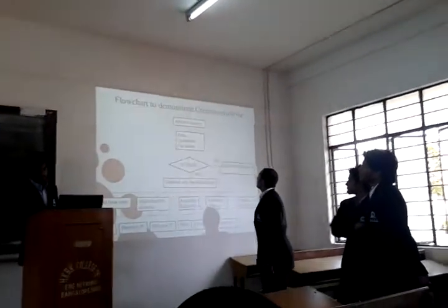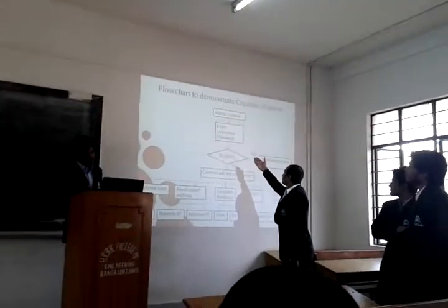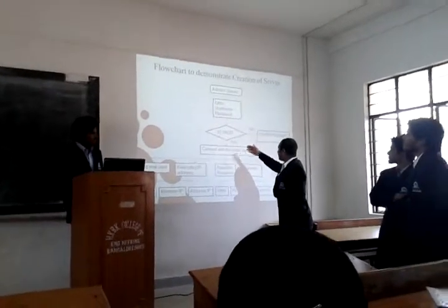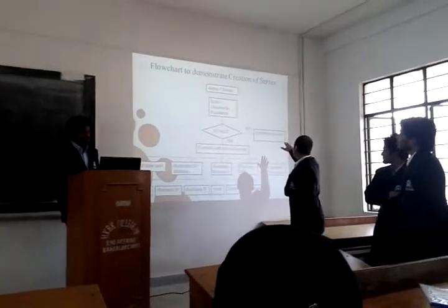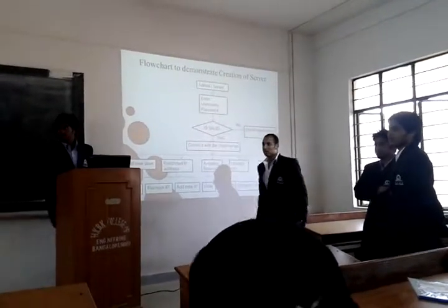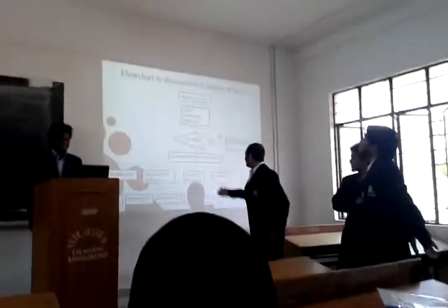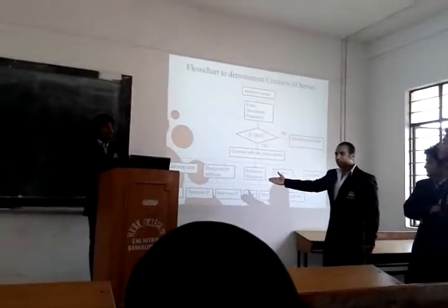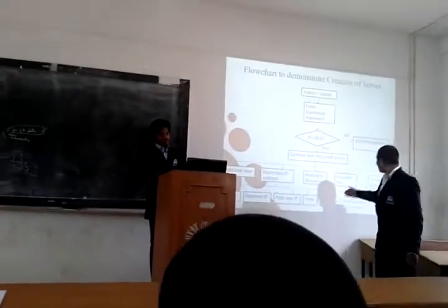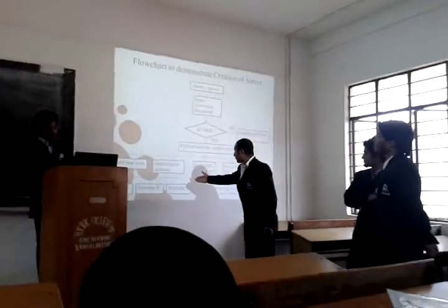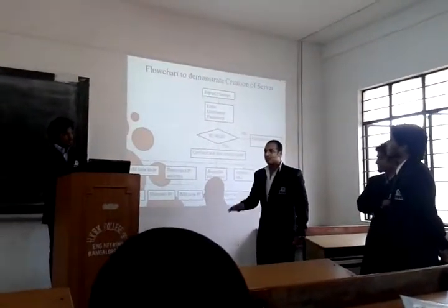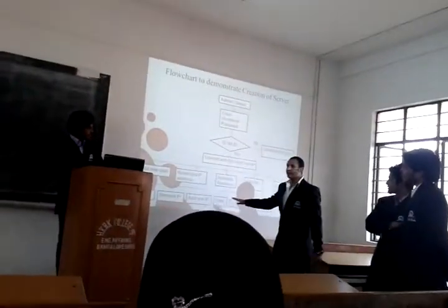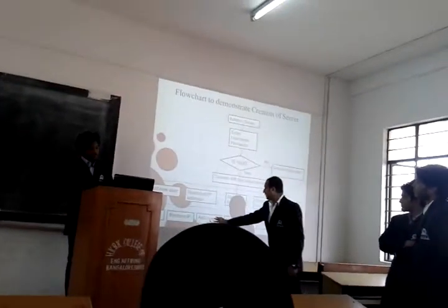Here we have the server flowchart. In the server, we have the admin login, where the admin has its own username and password. If valid, it connects to the cloud server; if not valid, it goes to unauthorized server. After the admin login, the admin has functions such as: add new user, restricted IP address, available resources, and hardware information. In the restricted IP address function, if the admin wants to stop authentication or prevent a user from accessing a file, he can restrict that user's IP address.